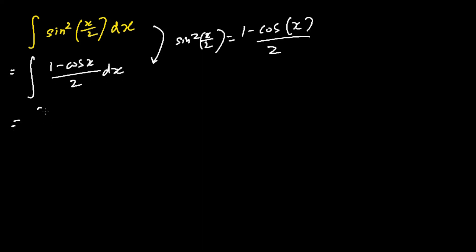The integral of half dx subtracting away the integral of cosine x over 2 dx. And now I can evaluate my integration. The integral of half dx is just half x, and my integral of cosine x over 2 is sine x over 2 plus c.